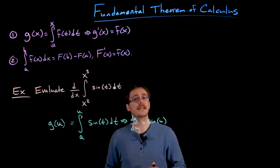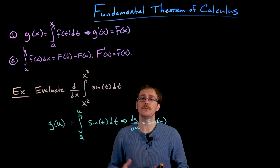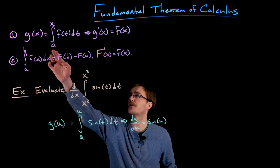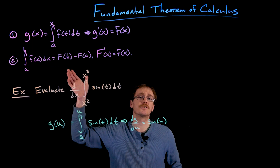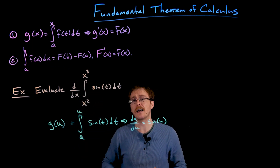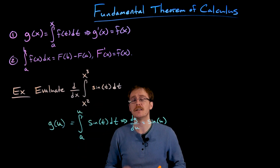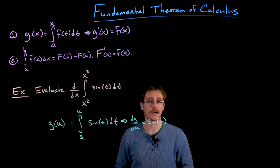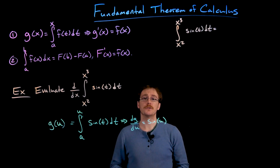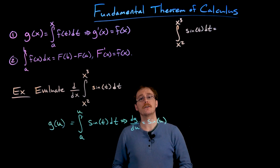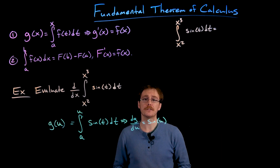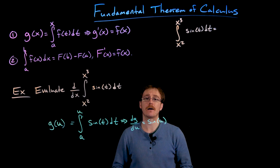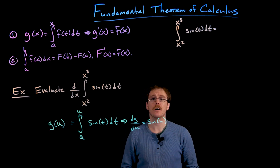There's a bit more manipulation we have to do. The other condition required to use the fundamental theorem of calculus part one is that our lower limit of integration is some constant a — it has to be a constant, not a variable like x squared. So the way we get around this issue is by rewriting our integral as the sum of two integrals using algebraic properties that allow us to manipulate integrals.